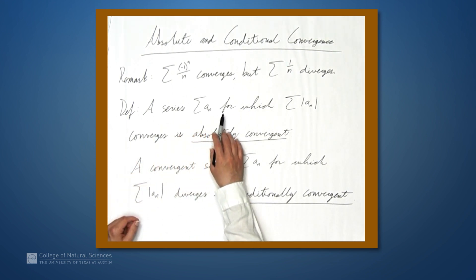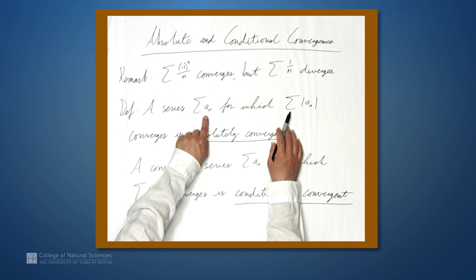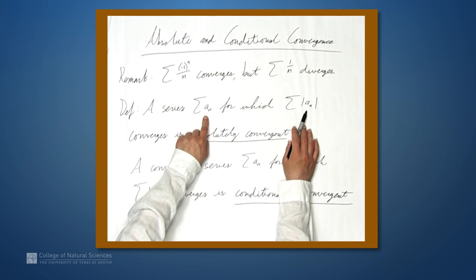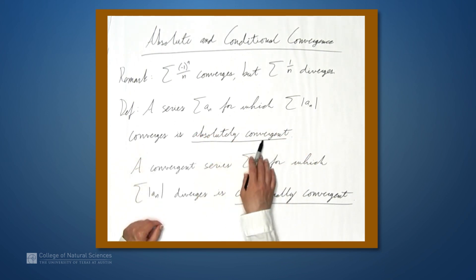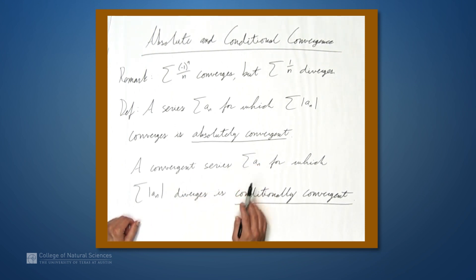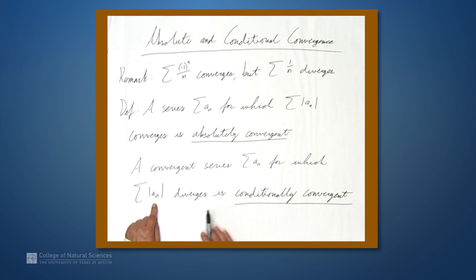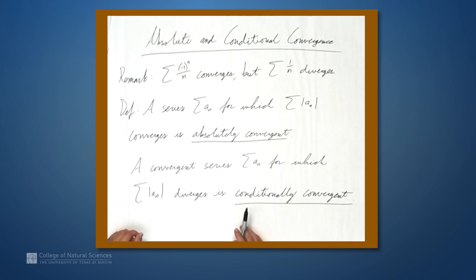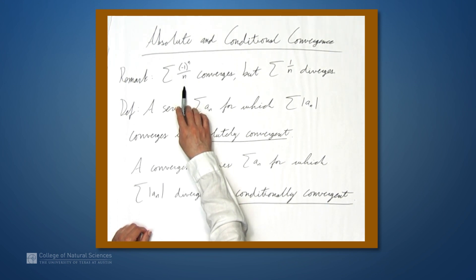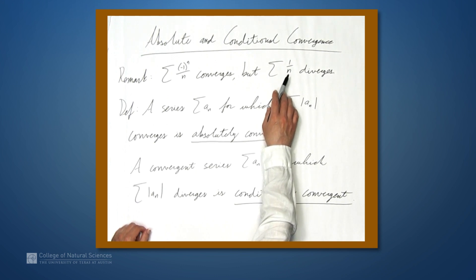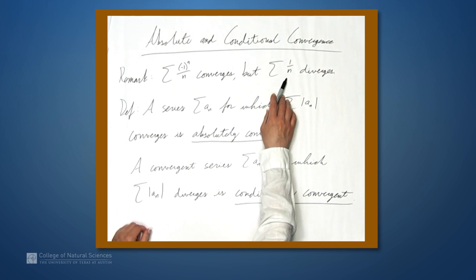A series for which the sum of the absolute values of a_n converges is called absolutely convergent. A convergent series a_n for which the sum of the absolute values of a_n diverges is called conditionally convergent. One example of something conditionally convergent is the alternating harmonic series, because it itself converges, but when you take the absolute value of all the terms, you get the harmonic series, which diverges.